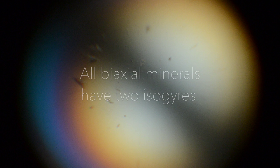This is the interference figure we have obtained. The extinct arm is called an isogyre. Although we only see one isogyre in this field of view, it is important to note that all biaxial minerals have two isogyres.